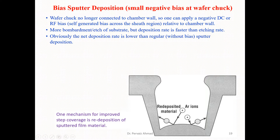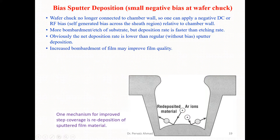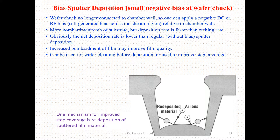Bias sputtering depositions will occur, but the net deposition rate is lower than regular sputter depositions. Increased bombardment of the film may improve film quality. This process can be used for wafer cleaning before deposition or to improve step coverage. The bias or re-deposition process applies a negative DC or RF bias relative to the chamber walls.